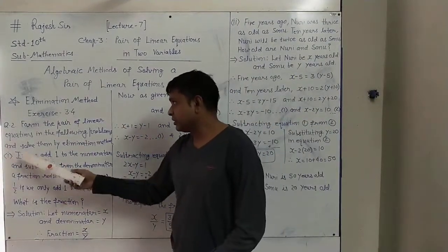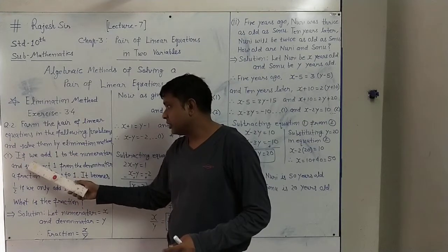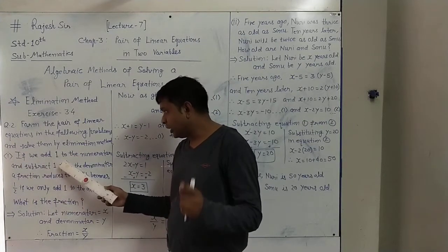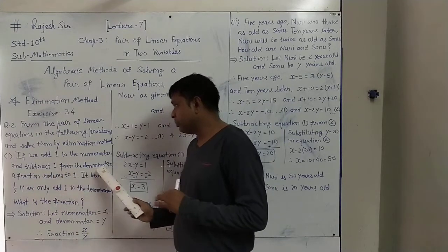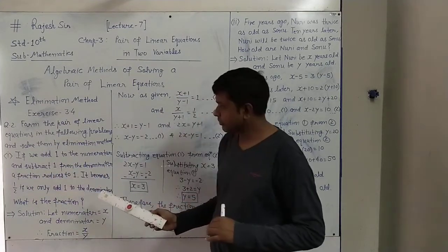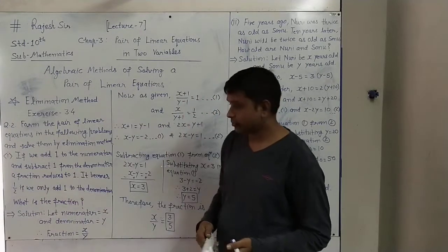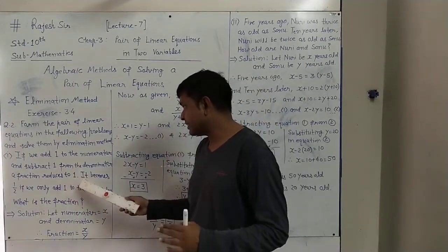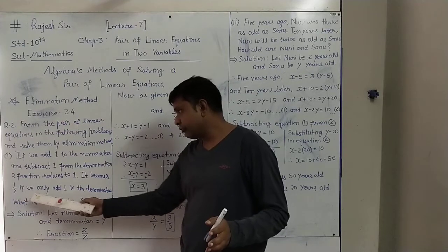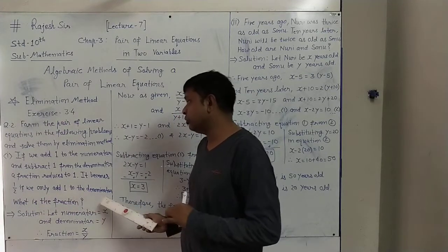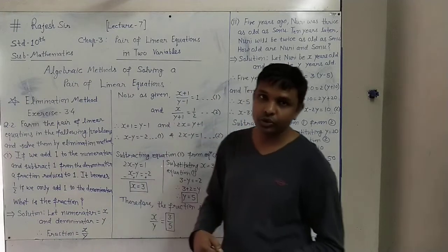The first problem in question 2 is: if we add 1 to the numerator and subtract 1 from the denominator, a fraction reduces to 1. In the second condition, it becomes 1/2 if we only add 1 to the denominator. What is the fraction?